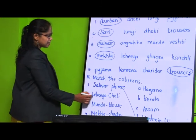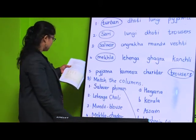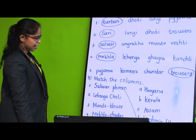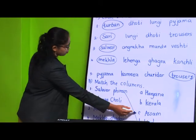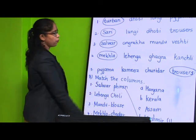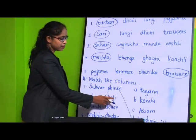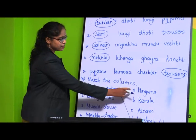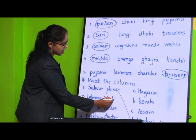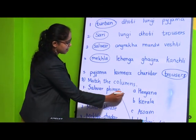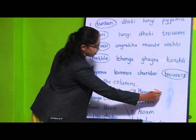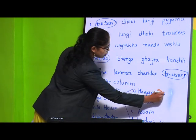Next is lehenga choli. Lehenga and choli are worn in Haryana - that is number 2 in the column. You can draw the line or write number 2 here.